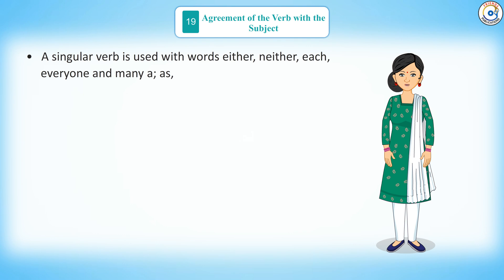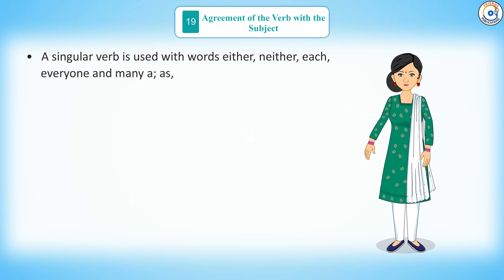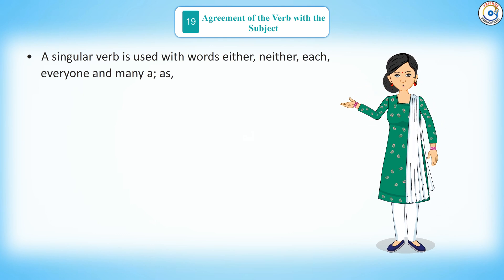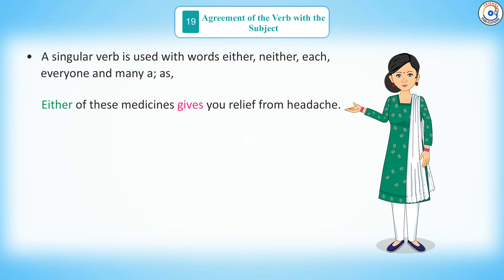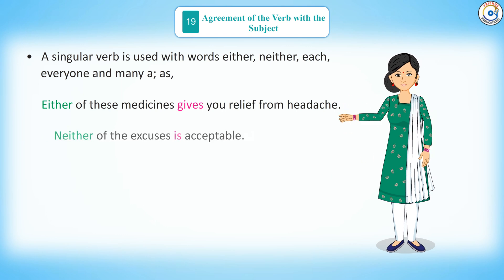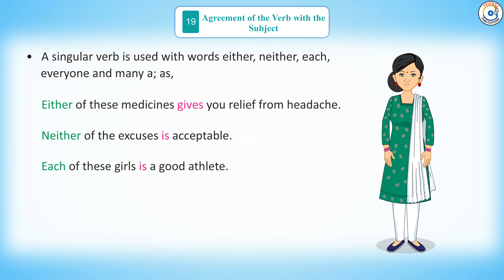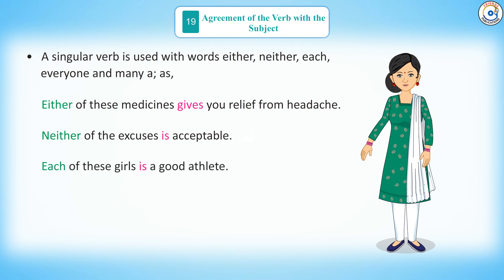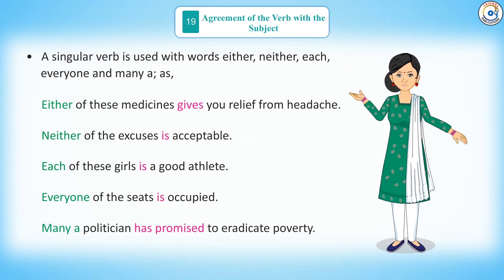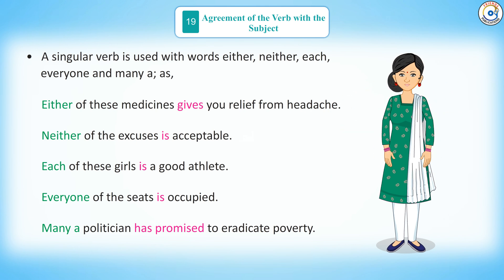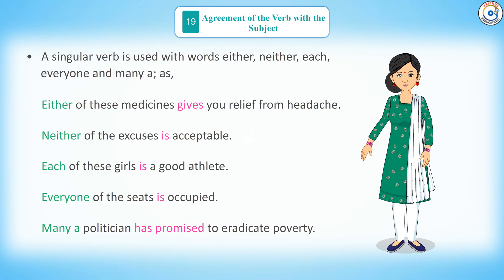Rule 4: a singular verb is used with words either, neither, each, everyone, and many a — as in: either of these medicines gives you relief from headache; neither of the excuses is acceptable; each of these girls is a good athlete; every one of the seats is occupied; many a politician has promised to eradicate poverty.